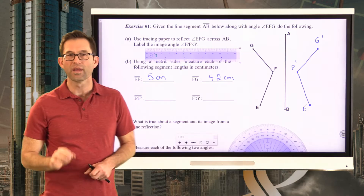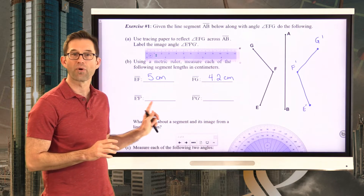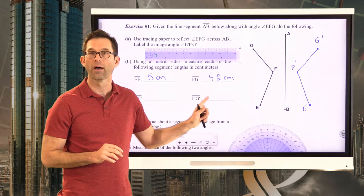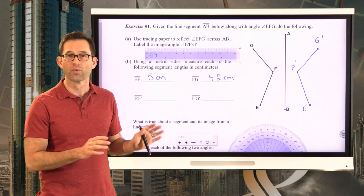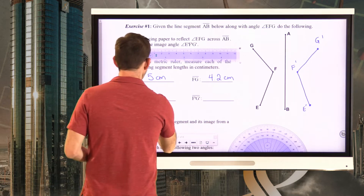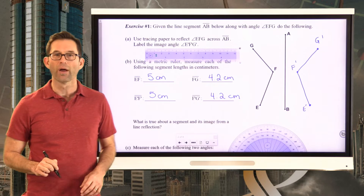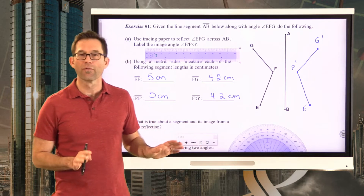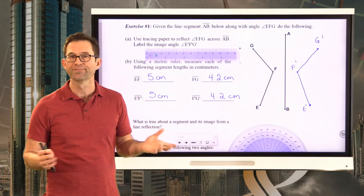Measuring the image segments E prime F prime and F prime G prime, it's probably not a great surprise that they are the same length as their pre-images. So it looks like a reflection doesn't change the length of a line segment.